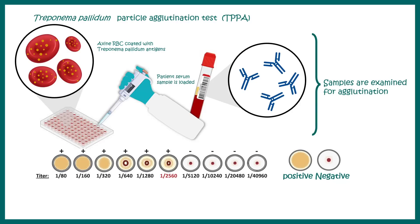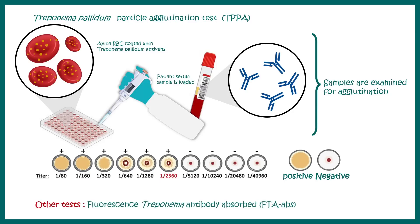A positive and negative test result can be checked for agglutination visually. There are also alternative sensitive tests such as the fluorescence Treponema antibody absorbed (FTA-ABS) test, which uses fluorescently labeled antibodies against specific Treponema antigens for detection.